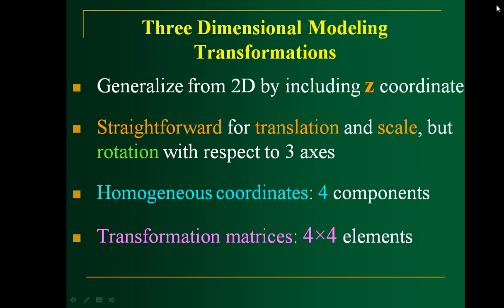Translation and scaling are straightforward, as you did for a 2D object. The difference lies in rotation. In 2D rotation, you have a single rotation since you have only two axes. Whereas in 3D space, you can divide 3D space into three planes — namely XY plane, YZ plane, and XZ plane — which means that you can perform rotation with respect to these three planes.